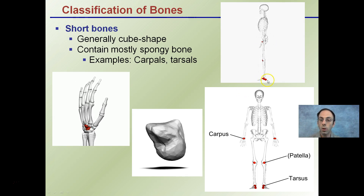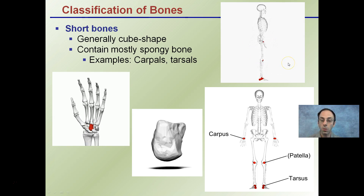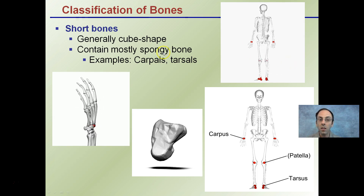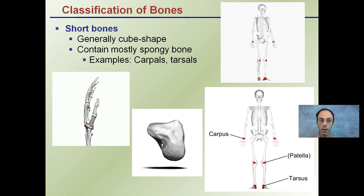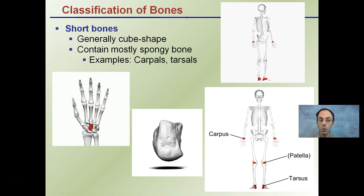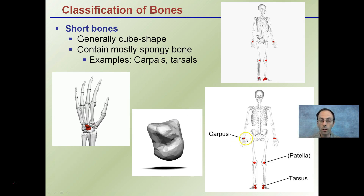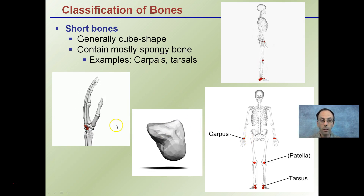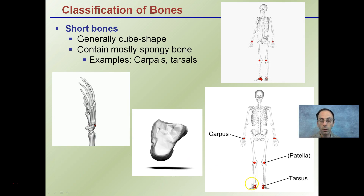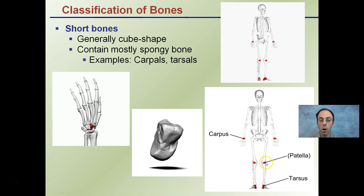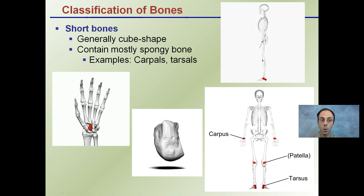Now we have our short bones. You can see where they're located, highlighted on our slowly rotating skeleton. Generally they're cube-shaped, and they contain mostly spongy bone. They're found in the carpals and tarsals — carpals are in our hand and tarsals are located in the foot region. Also, the patella, or kneecap, is classified as a short bone.